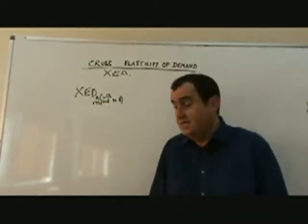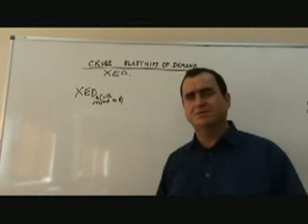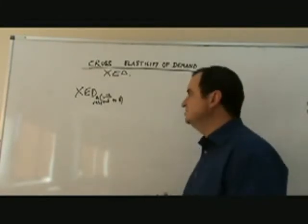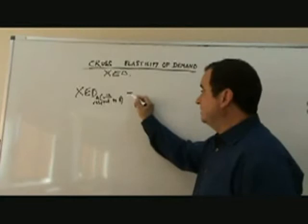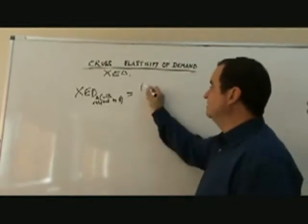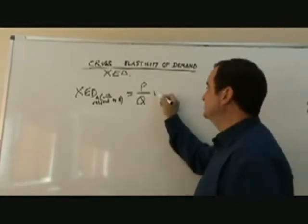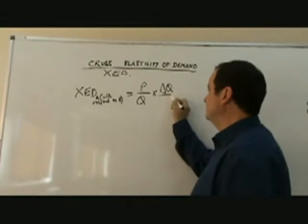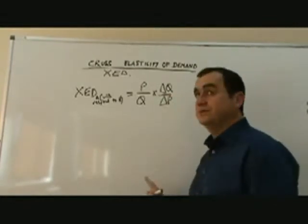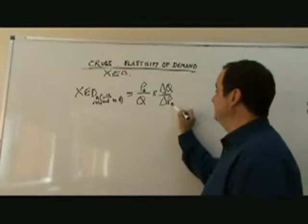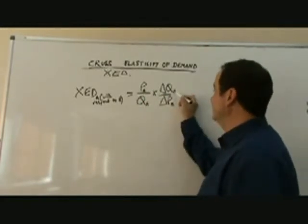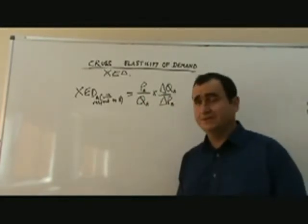A's price is not changing. Income is not changing. Ceteris paribus, we are just looking at the change in the price of B. Equals, how do we calculate it? Well, it's the old equation, P over Q times change in Q over change in P. But of course, it's the price of good B and the quantities of good A.